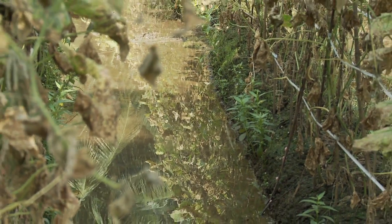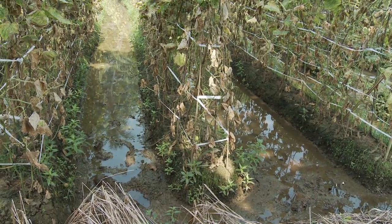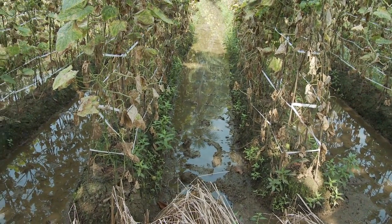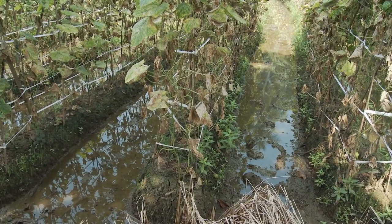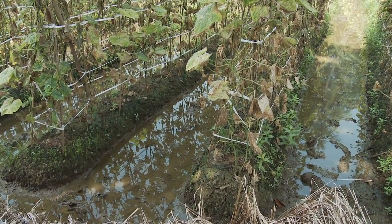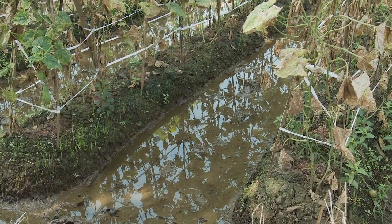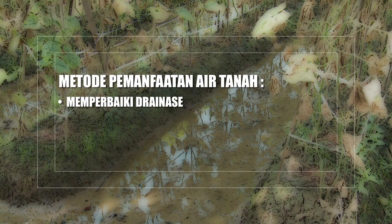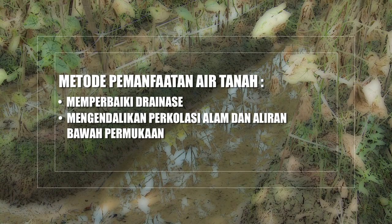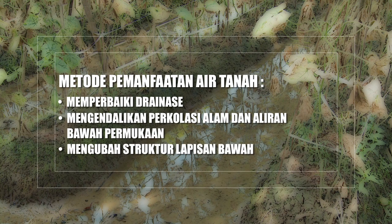Metode konservasi air dengan cara meningkatkan pemanfaatan air tanah adalah usaha mengelola air tanah untuk meningkatkan efisiensi penggunaan air oleh tanaman. Hal ini dilakukan dengan berbagai cara antara lain: memperbaiki drainase, mengendalikan perkolasi alam dan aliran bawah permukaan, dan mengubah struktur lapisan bawah.